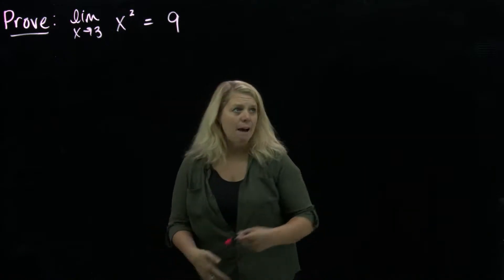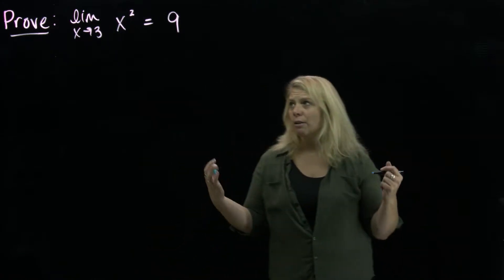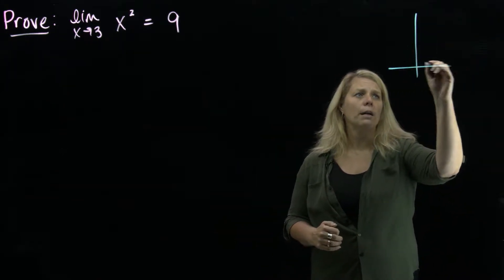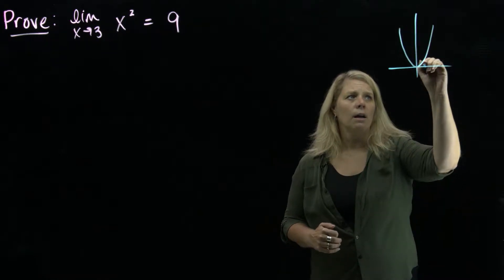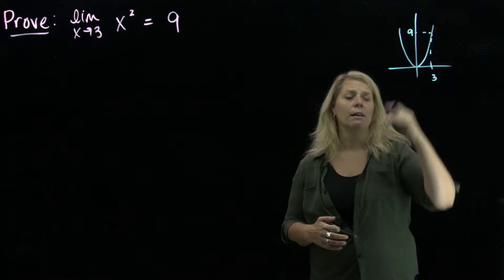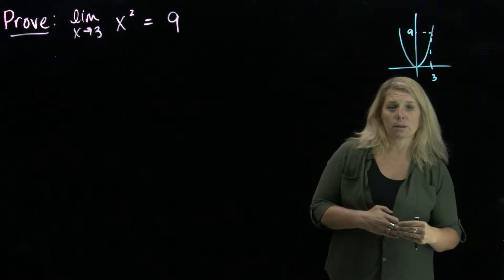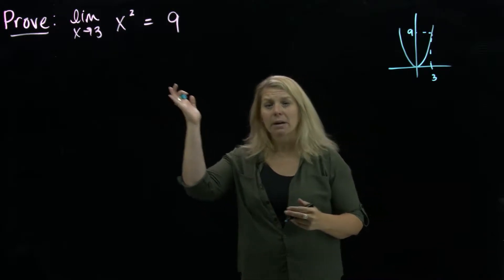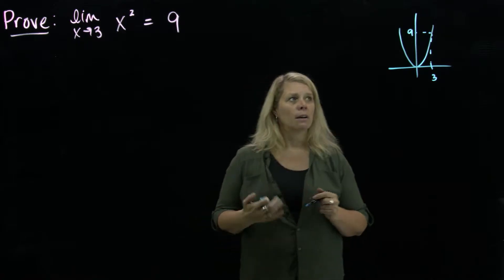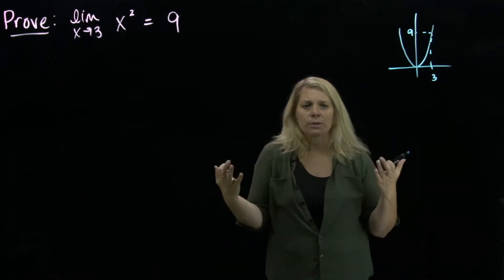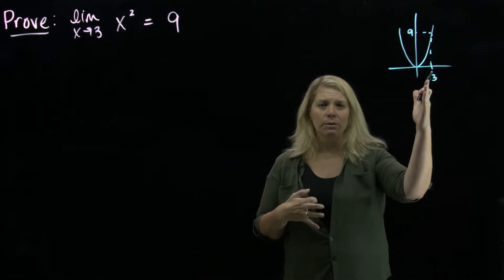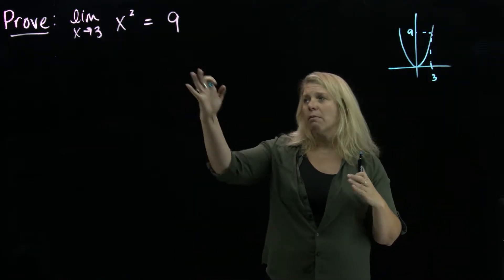I'm going to go ahead and draw a graph, even though you don't necessarily need a graph to think about this limit, because it will help us in the actual proof. We know y equals x squared. When x is close to 3, the y values are close to 9. When x equals 3, y equals 9, but remember that's not what a limit is really about — it's about being close, but not at 3. Because this is a nice function, a parabola, it doesn't do anything weird around x equals 3.